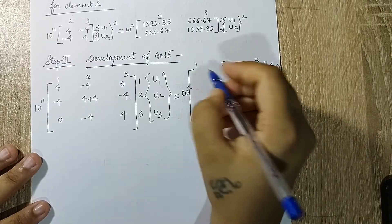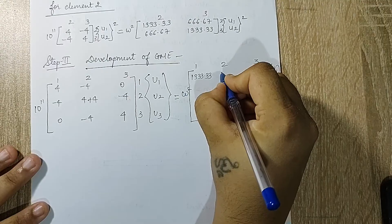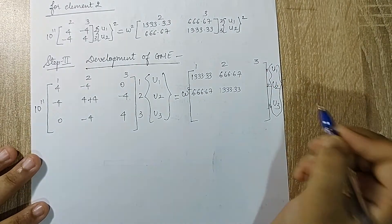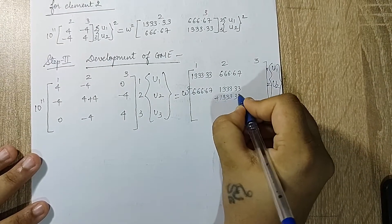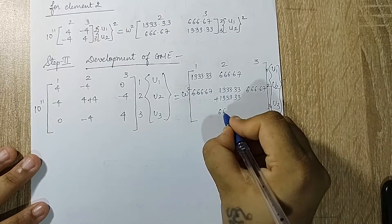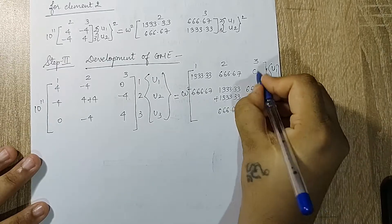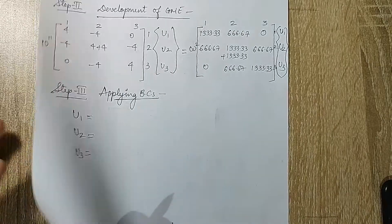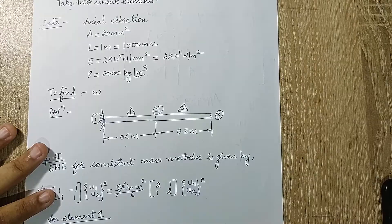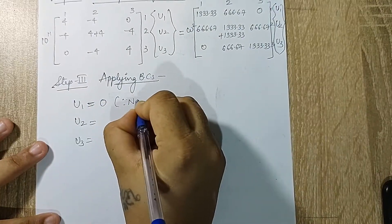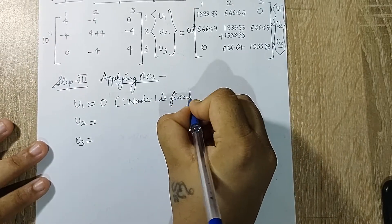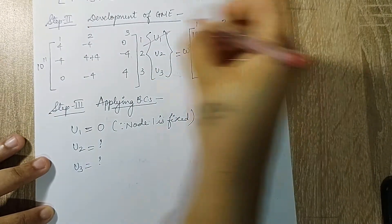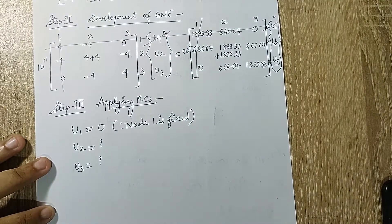Step 3: applying boundary conditions. We have three variables u1, u2, u3. Node 1 is fixed, so u1 = 0; nodes 2 and 3 are free (unknown). Since u1 = 0, we eliminate the first row and first column and solve for the reduced system with u2 and u3.